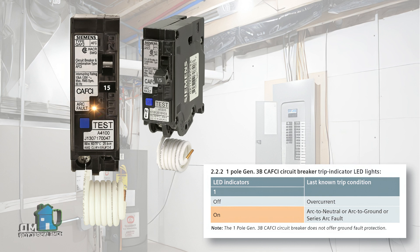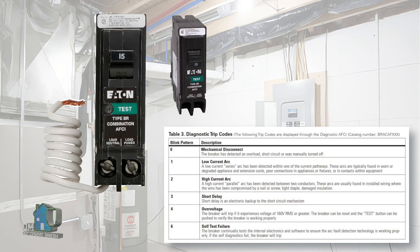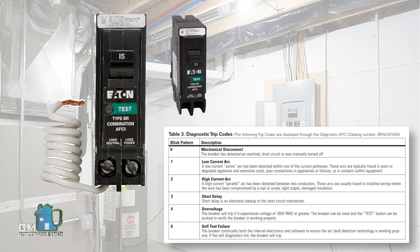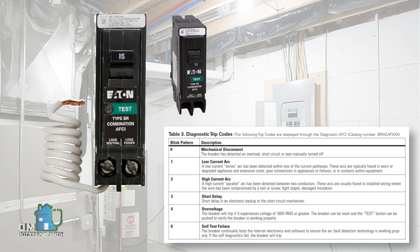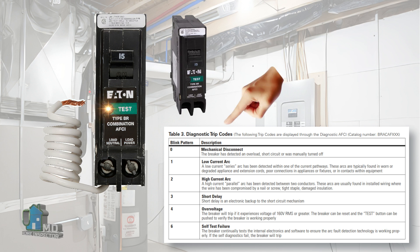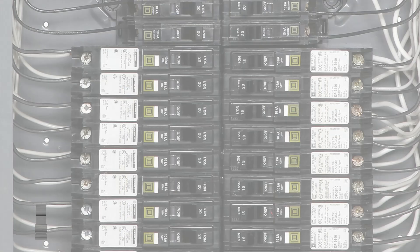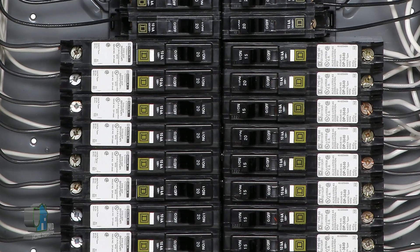What about Eaton circuit breakers? The most common Eaton breakers in Canada are the BR type. They have their own version of diagnostic trip codes and also use an LED, but they use a blink pattern instead. Eaton does it a little differently — the number of blinks indicates the problem. For example, if you see two blinks repeated, it means the problem is a parallel arc.